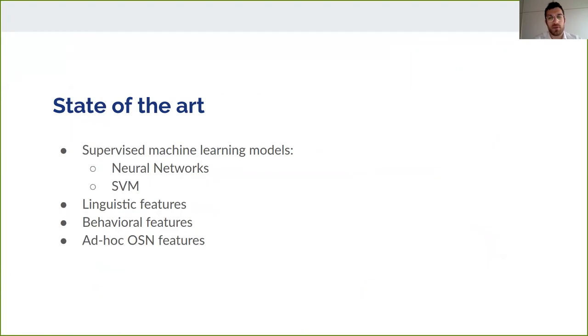Up to now the state of the art for sockpuppet detection is represented by supervised machine learning models such as neural networks and support vector machines that exploit linguistic features extracted from the textual content like TF-IDF, behavioral patterns of the users, and specific OSN-related features that, not being general, can't be exploited on other OSNs.